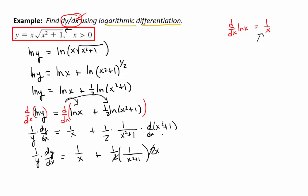Multiply both sides by y now to get dy dx by itself. And so we're going to have dy dx equals y times 1 over x plus x over x squared plus 1. Now, since our original function was written in explicit form, we can replace the y with what it's equal to, and we should do that.